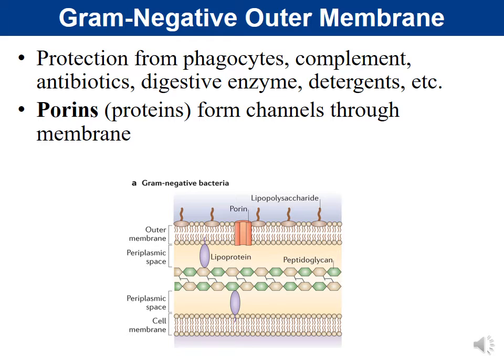The outer membrane of gram-negative bacteria has several functions. First, it helps protect from phagocytosis — when white blood cells engulf and destroy bacteria. This membrane makes it harder for the immune system to do phagocytosis, which means it's harder for the body to eliminate that bacteria.